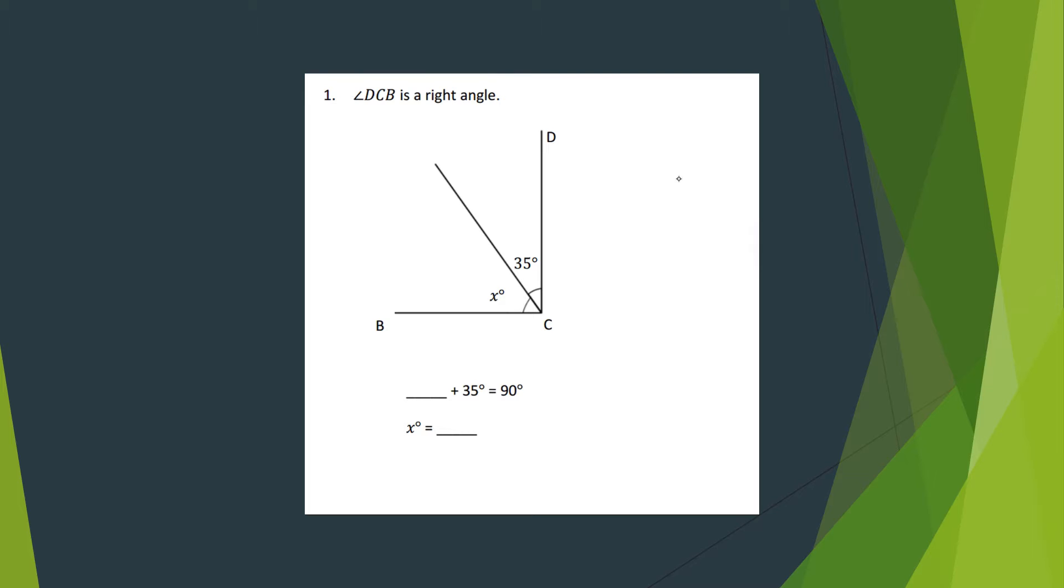If we look at this first problem, they tell us right away that the angle we should be looking at is a right angle. We can see the right angle - I'll trace it - this corner is a perfect corner, a backwards L. It's not slanted or pinched or open wide, it's a perfect corner, and that's a right angle. We know that right angles measure 90 degrees.